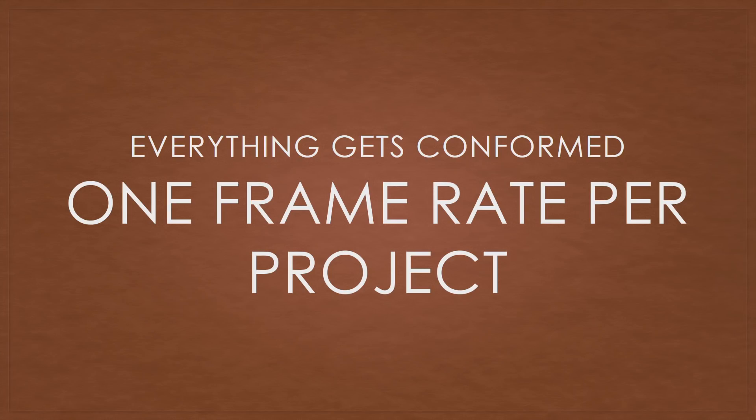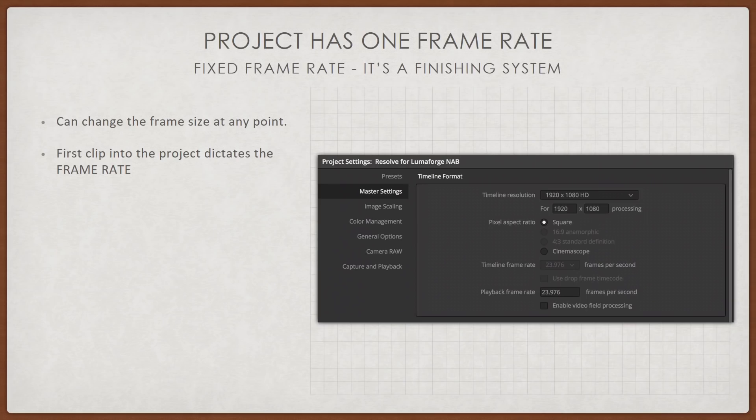The last speed bump: everything gets conformed to a single frame rate per project. If you're used to having five different frame rates in one project, Resolve can handle multiple frame sizes but only one frame rate per project — it's a finishing system. You can have other projects if you need to conform at different speeds.